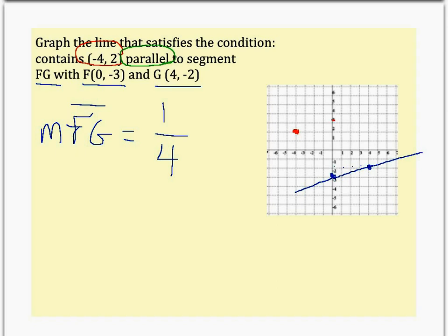So up 1 over 4, up 1 to the right 4, up 1 to the right 4, or down 1 to the left 4. And you've got your points to connect.